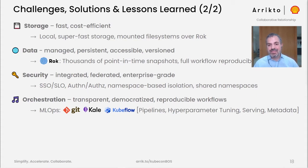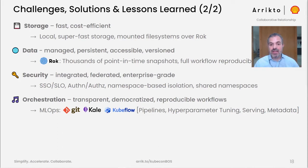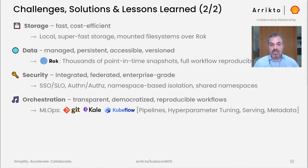On security, we have implemented single sign-on, single logout, centralized authentication, and authorization against different namespaces. We create a private namespace per user, but we can also support shared namespaces where different users share access to the same set of resources — for example, the same pipeline runs. On orchestration, we implement MLOps. We combine the power of Git, Kale — our open source tool which converts notebooks into production pipelines — and orchestrate hundreds or thousands of pipelines for hyperparameter tuning and eventually serving. The glue that brings all of this together is the metadata we record at each phase of the workflow.